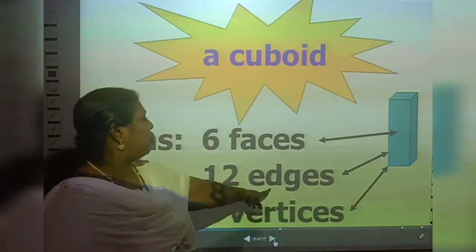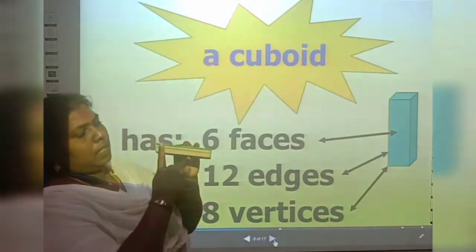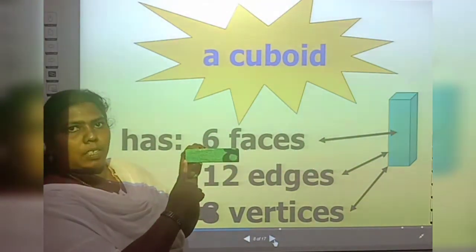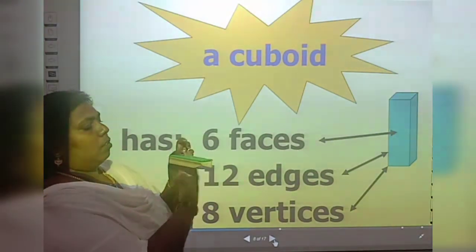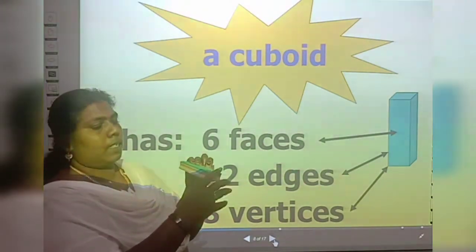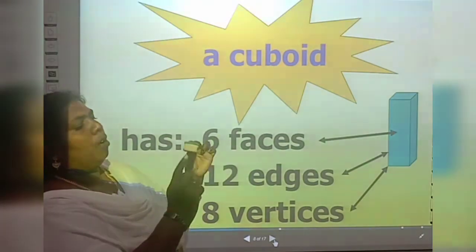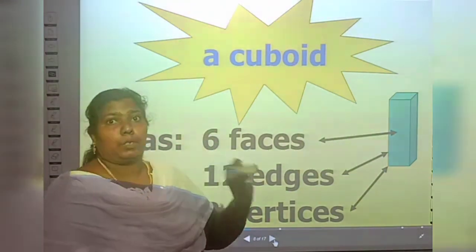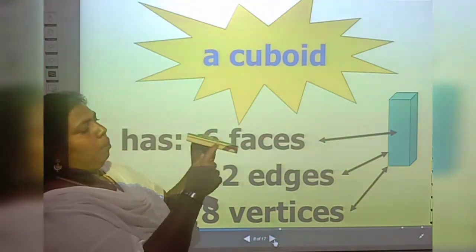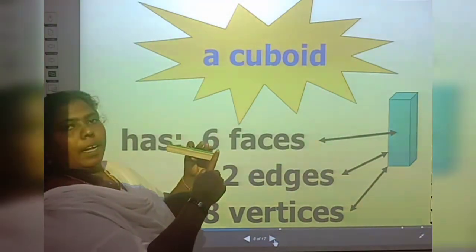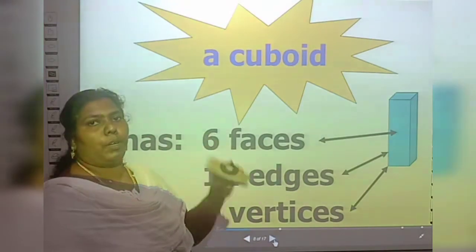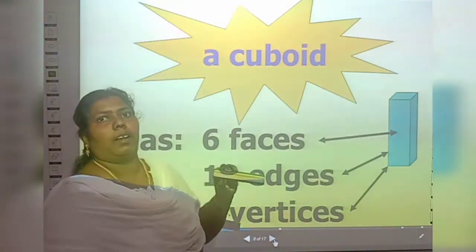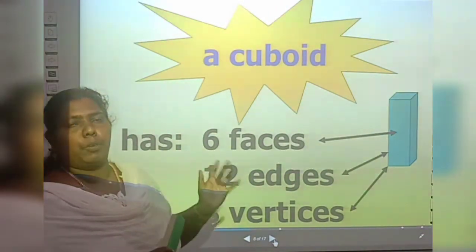In the cuboid, the face is rectangle-shaped. You can see the rectangular shape here. It has 6 faces: 1, 2, 3, 4, 5, 6. Then 12 edges: 1 through 12. Then 8 corners: 1, 2, 3, 4, 5, 6, 7, 8. The difference between cube and cuboid is that the cube's face is square-shaped and the cuboid's flat face is rectangle-shaped.